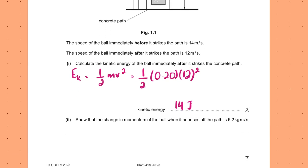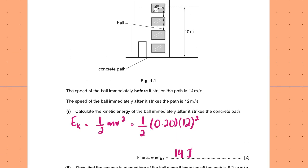The change in momentum of the ball when it bounces off the path is 5.2 kg·m/s. For this, even though it's easy for a well-prepared candidate, let me still talk about it. When the ball is falling it hits with a speed of 14 m/s and rebounds at 12 m/s. This is a case where direction is also changing, so we need to use the sign convention.